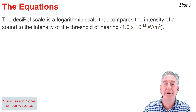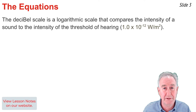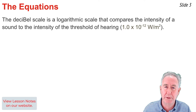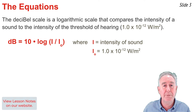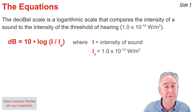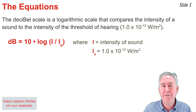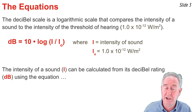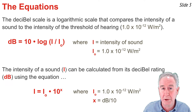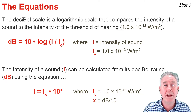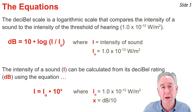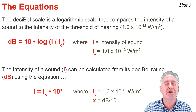The decibel scale is a logarithmic scale that compares the intensity of a sound to the intensity of the so-called threshold of hearing, defined mathematically as 1×10⁻¹² watts per meter squared. If you know the intensity of a sound in watts per meter squared, you can calculate the decibel rating using this equation: dB equals 10 multiplied by the log of the ratio of I to I₀, where I₀ is 1×10⁻¹² watts per meter squared. If you know the decibel rating, you can calculate the intensity using: I equals I₀ multiplied by 10 raised to the power x, where x is the bell rating — the decibel rating divided by 10. In this video, we will use these equations to solve several problems.